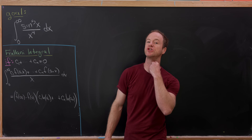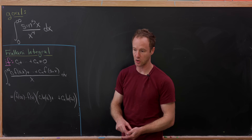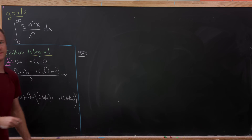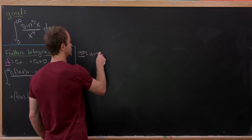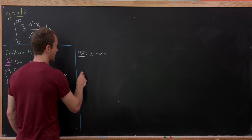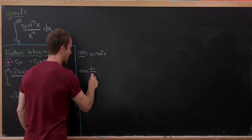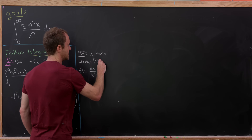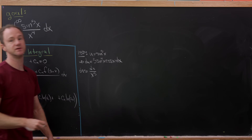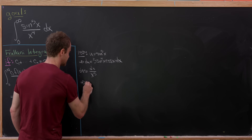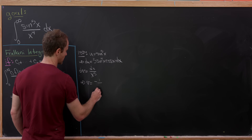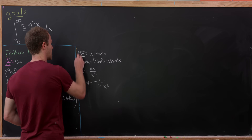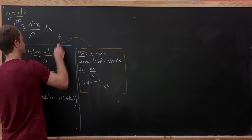Now we're ready to evaluate our goal integral. We start with integration by parts. For the first round, take u = sin⁵(x) and dv = dx/x⁵. Then du = 5sin⁴(x)cos(x)dx, and v = −(1/3)(1/x³). So the integration by parts setup is complete.